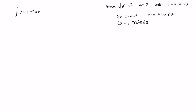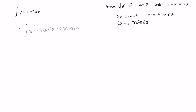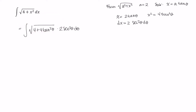So now I can replace a bunch of stuff here. This x squared will be replaced with 4 tangent squared theta. This dx will be replaced with 2 secant squared d theta. The constant can be moved out front, and in the radical I have a 4 on each term, so that can also be moved out.